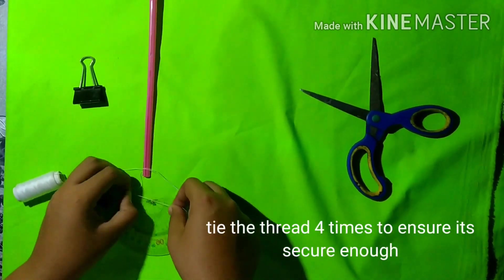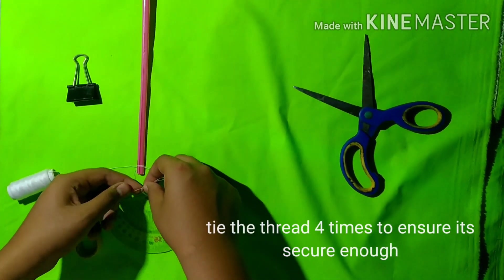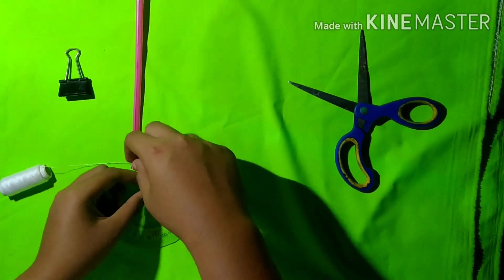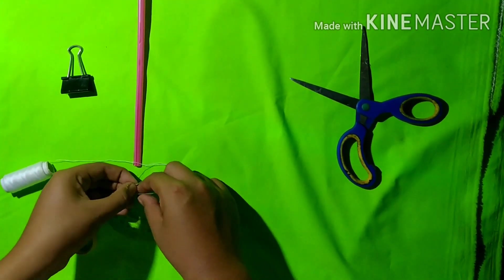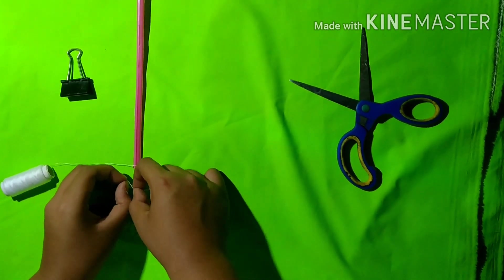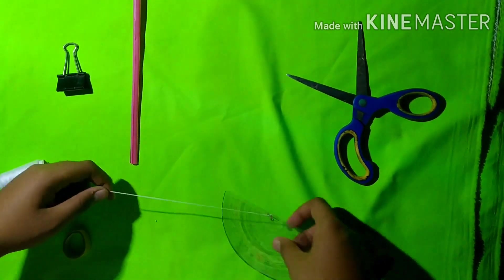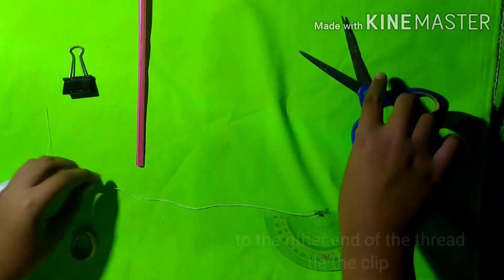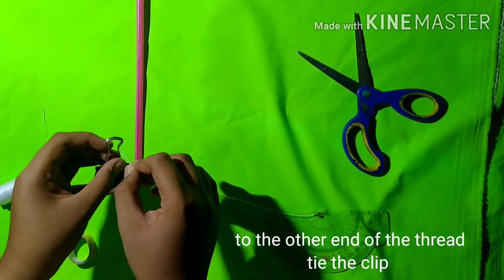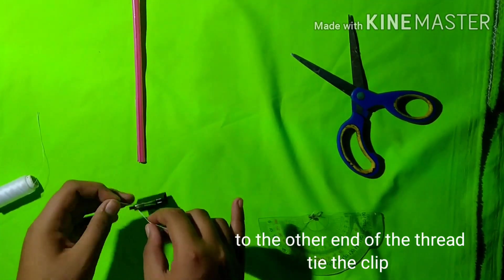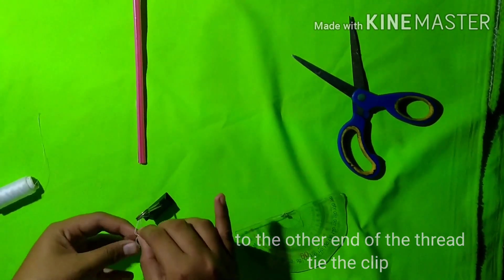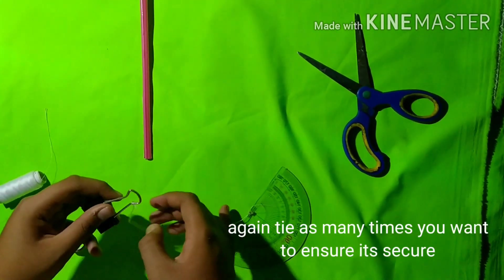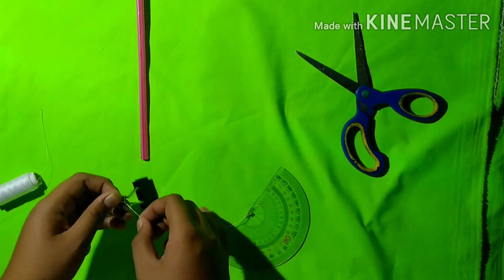Tie the thread four times to ensure it's secure enough. To the other end of the thread, tie the clip and secure it as well.